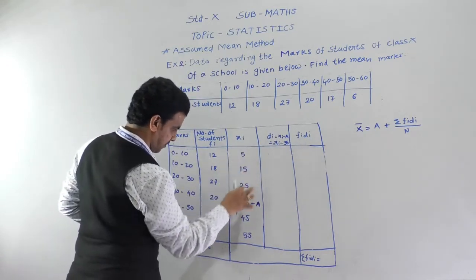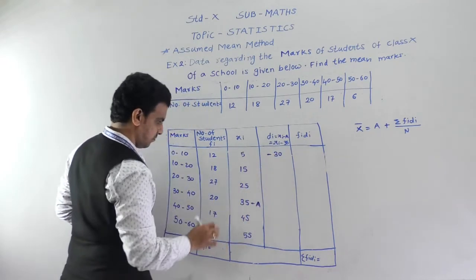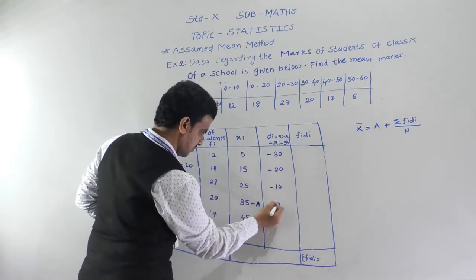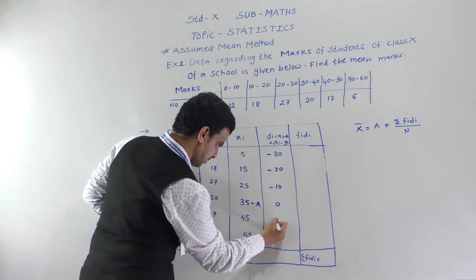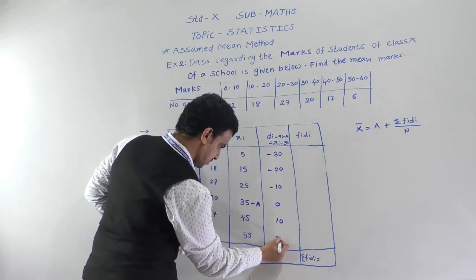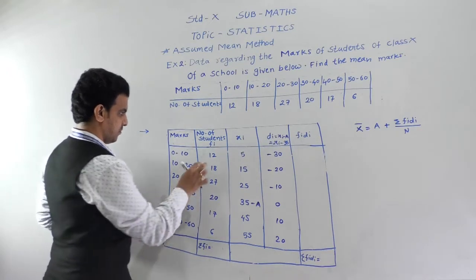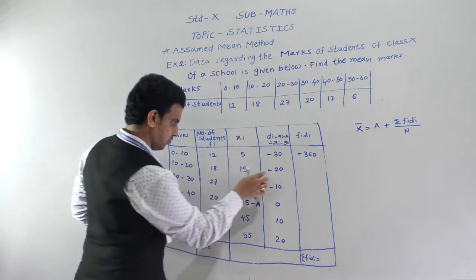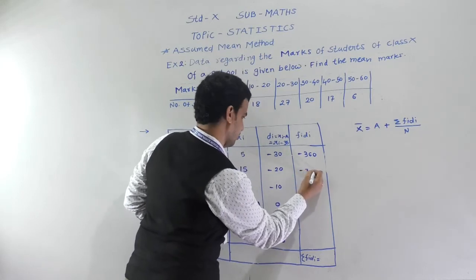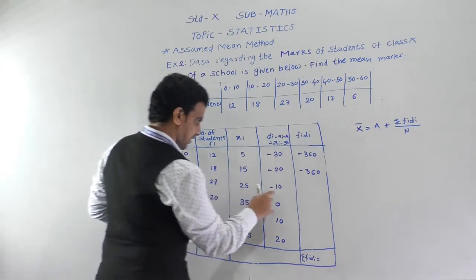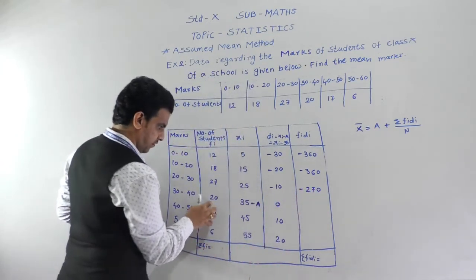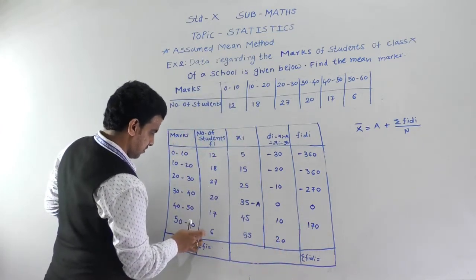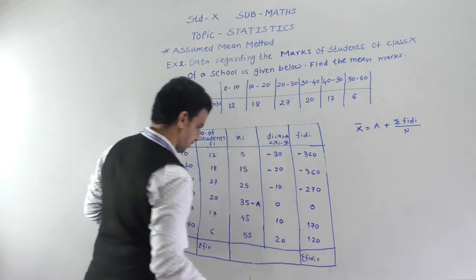Computing di = xi − 35: 5 − 35 = −30; 15 − 35 = −20; 25 − 35 = −10; 35 − 35 = 0; 45 − 35 = 10; 55 − 35 = 20. Then fi × di: 12 × (−30) = −360; 18 × (−20) = −270; 20 × (−10) = −200; 23 × 0 = 0; 27 × 10 = 270; 6 × 20 = 120.